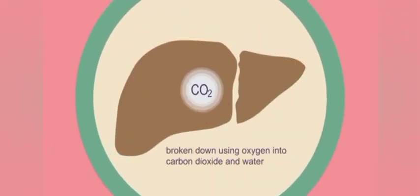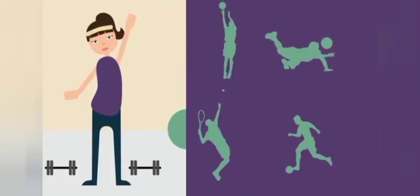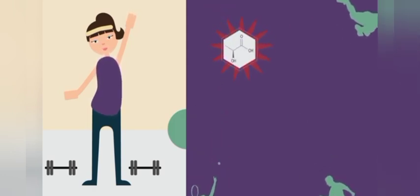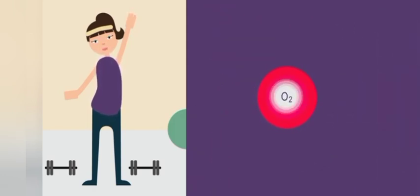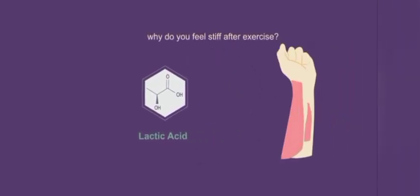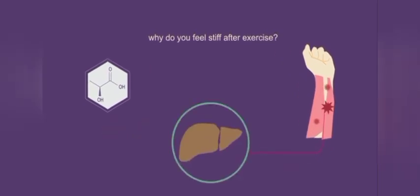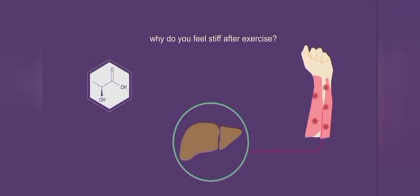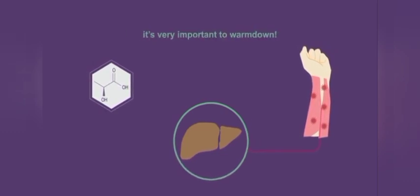When you stop exercising, the lactic acid in the liver is converted into carbon dioxide and water. That is what is meant by oxygen debt. When there is oxygen deficiency, our muscles automatically shift to anaerobic respiration. The stiffness and pain you feel is because lactic acid accumulates there, and it is removed by the liver when you stop after doing vigorous exercise.